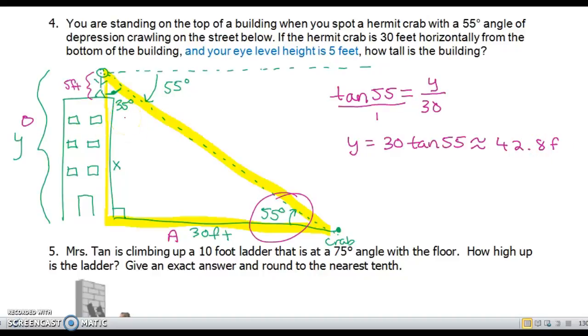So now we have to take that and subtract the 5 feet to find the height of the actual building. So height of the building, which is X, that's going to equal Y minus 5, okay. So it's going to be Y minus the height of your eye level. So in this case it's going to be 42.8 minus 5, so the total height of the building then is going to be 37.8 feet.